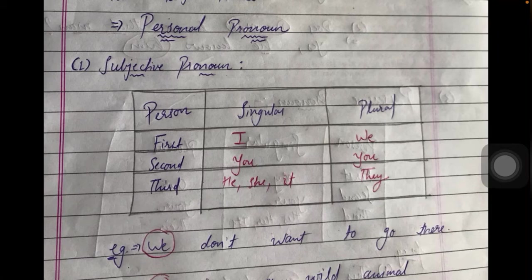In subjective pronouns there are three types of person. The first person is the person who is speaking. The second person is the person being spoken to. The third person is the person being spoken of. If the person speaking is singular, we apply 'I.' If first person is in plural form, we apply 'we.'